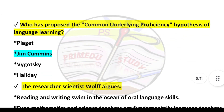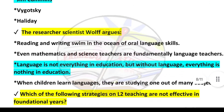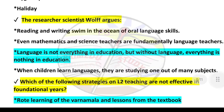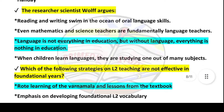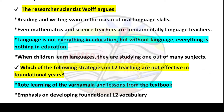Next question: Who has proposed the Common Underlying Proficiency hypothesis of language learning? Answer is option number two: Jim Cummins. Next question: The researcher/scientist Wolf argues — answer is option number three: language is not everything in education, but without language everything is nothing in education.